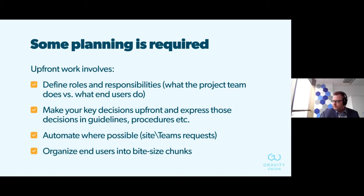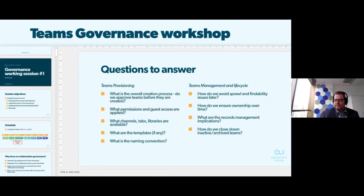We organize end users into bite-sized chunks for a staged rollout. Here's an example from a Teams governance workshop we do with clients early in a Teams rollout: we want to decide how things will be provisioned, what end users are allowed to do versus not, and what the security and access implications are. We address these questions early so that as Teams usage grows, we know where things could end up. I break it down into provisioning — the initial state — and then management and lifecycle for the longer term, to avoid sprawl and findability issues.